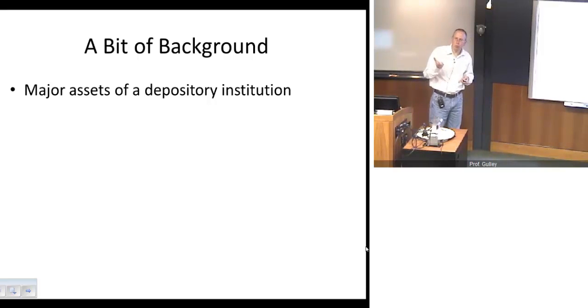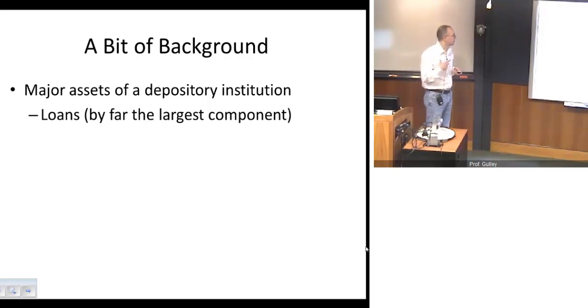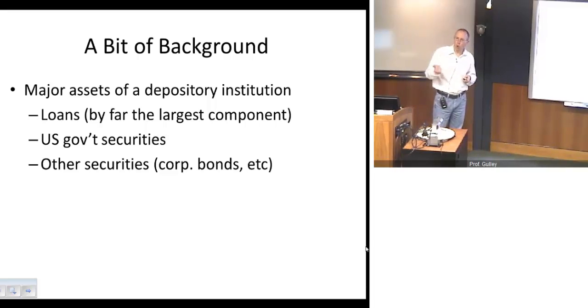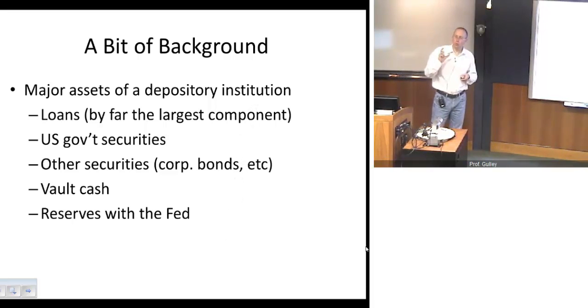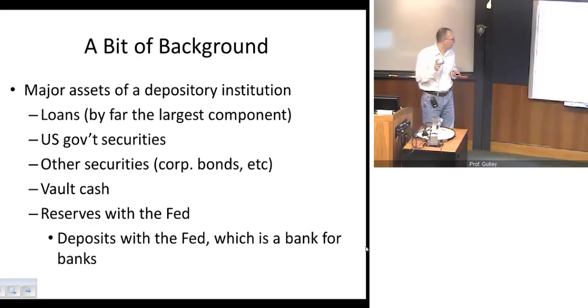If you look at a depository institution and what their balance sheet looks like, the loan component is by far the largest. That's not surprising. That's why we invented banks and other similar institutions to make loans. They also hold U.S. government securities, so they lend money to the government. They hold other securities. They hold corporate bonds, for example. They also hold vault cash, so this is when you and I go to the bank and we want to make a withdrawal. The bank can actually come up with cash to do that. And they also hold what are called reserves with the central bank. In this case, the Fed.